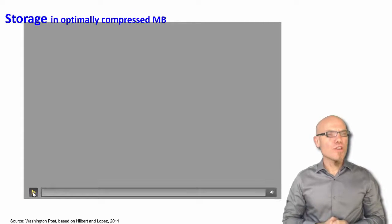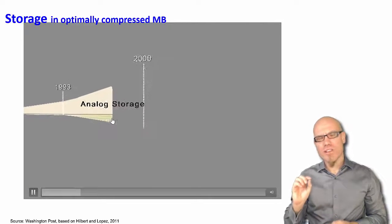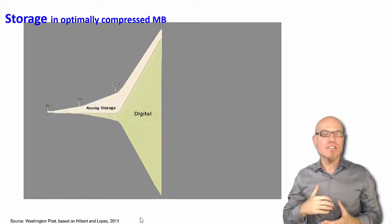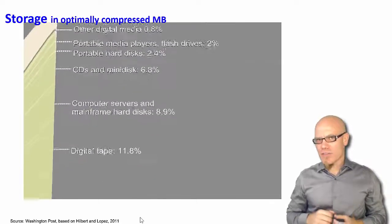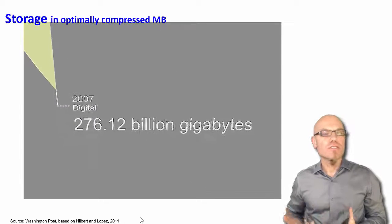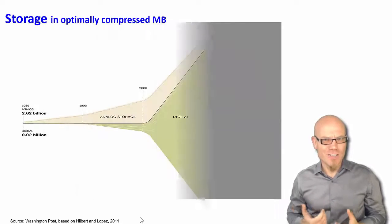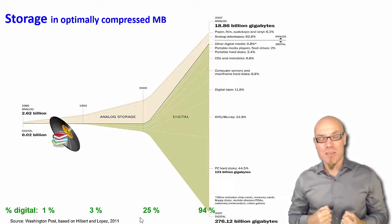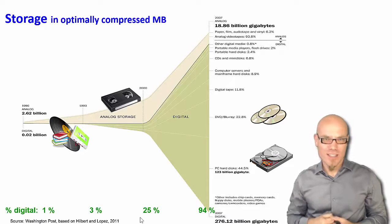For example, this animation here shows the growth of the world's capacity to store information. The white part that you see is the analog storage capacity of the world; the green part is the digital. And you can see that after the year 2000, the digital capacity basically explodes, which leads to this global information explosion as well. That doesn't mean that analog information — stored, for example, on papers or on tapes — doesn't exist anymore. It still exists, and the usage of paper grows, just at 3%, 4%, 5% a year. We know that the paperless office never existed. However, the digital technology grows much faster, at 25% per year.